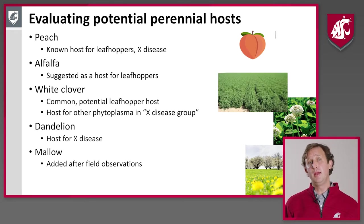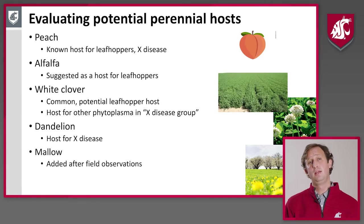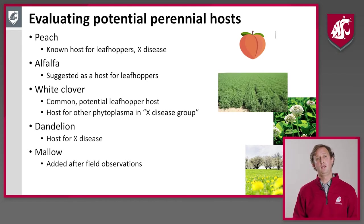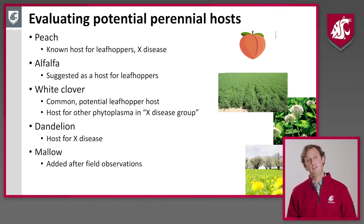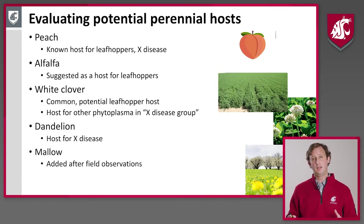Perennial plants that host both the phytoplasma and the leafhopper but are not cherry trees may serve as alternative hosts. We started evaluating a number of plants in and around orchards that we thought might be important. Peach is known to host phytoplasma and leafhoppers. Alfalfa is a host for leafhoppers. White clover, dandelion, and mallow are also candidates — dandelion has been shown to host phytoplasma, but we didn't know how commonly leafhoppers were feeding on it. So we decided to evaluate these in host feeding trials, giving leafhoppers a variety of plants to see what they choose.